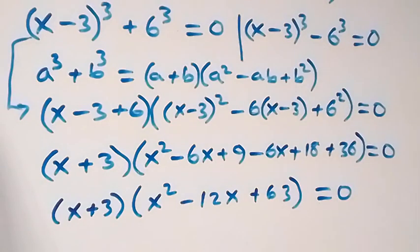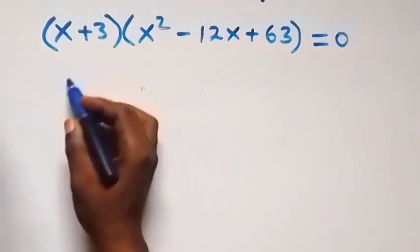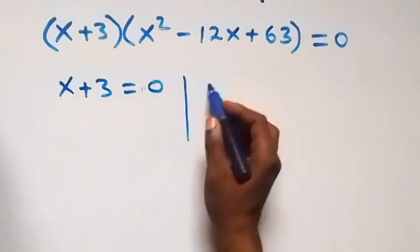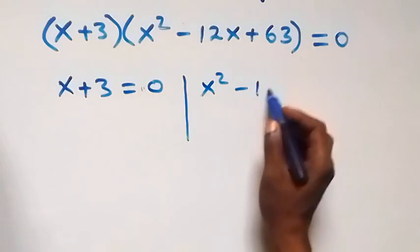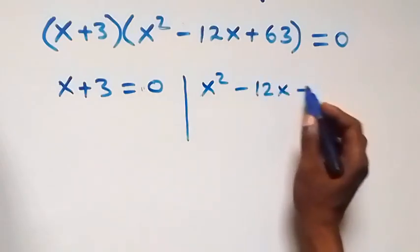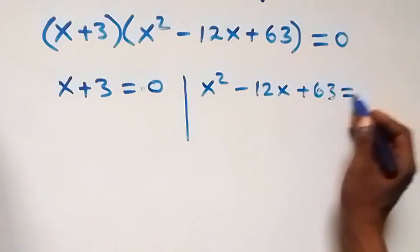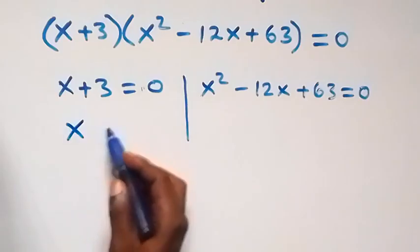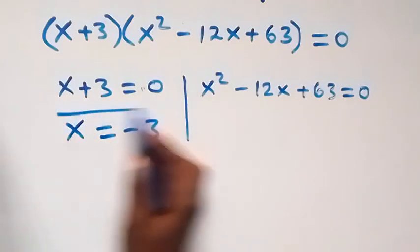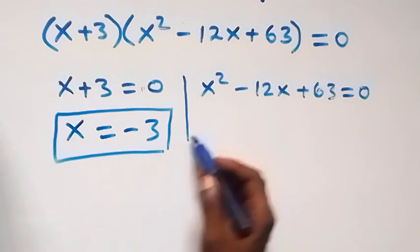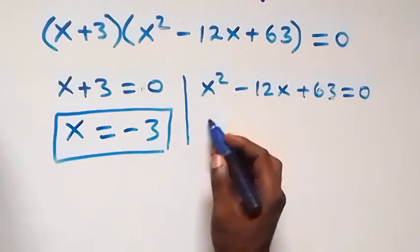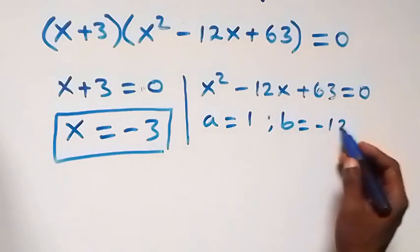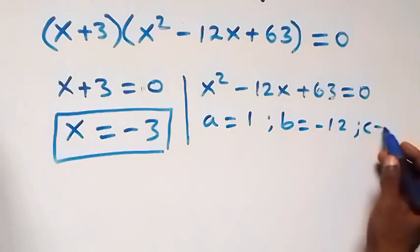We have two sub-cases: x + 3 = 0, giving x = −3; or x² − 12x + 63 = 0. For the quadratic, a = 1, b = −12, and c = 63.